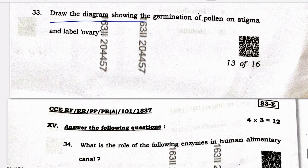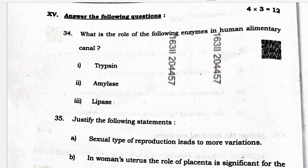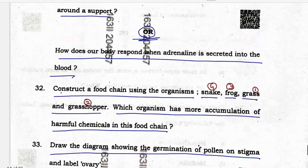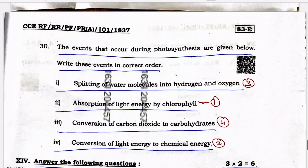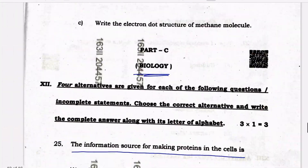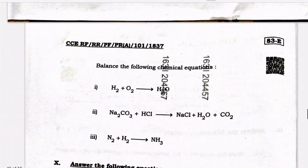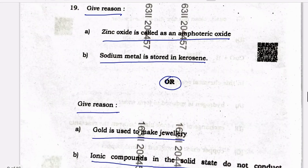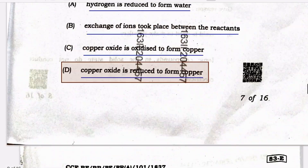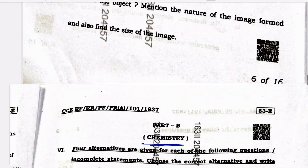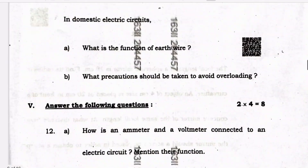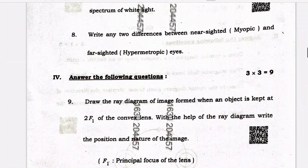Draw the diagram showing the germination of pollen on stigma and label the ovary — this was also a question mentioned in our previous series. That's all for today. I will solve the remaining questions and upload the answers in our next video. I hope this video has helped you analyze your answers and get a clear idea of your performance. No matter how your exam went, stay positive and keep learning. Thank you.